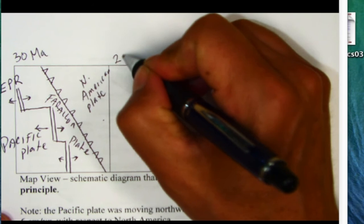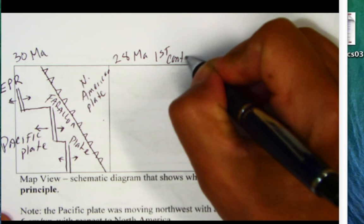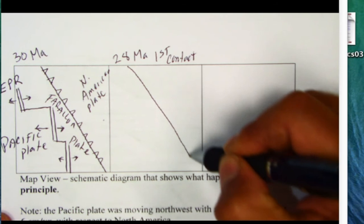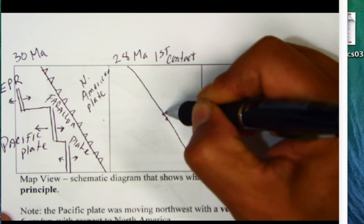An interesting thing happens at about 28 million years ago. I call this first contact. What I mean by that is we're going to have part of this East Pacific Rise come in contact with the trench. We'll draw our trench again but now I'm going to draw a couple of points here, one in the north M and one in the south R.